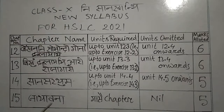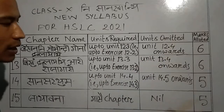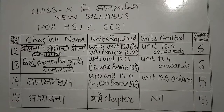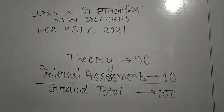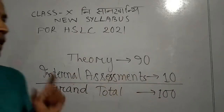The next step is to get the units to be divided by 15, and units to be omitted. We are going to talk about internal assessment.